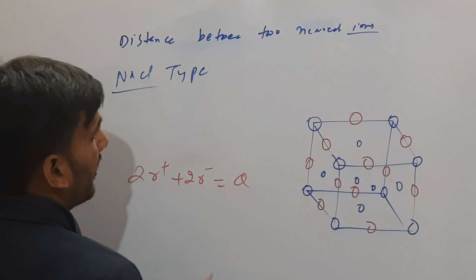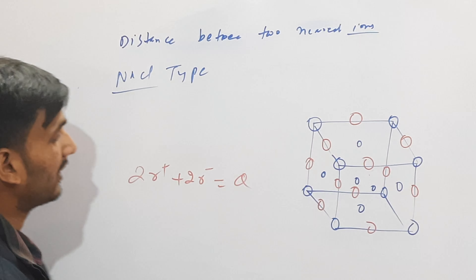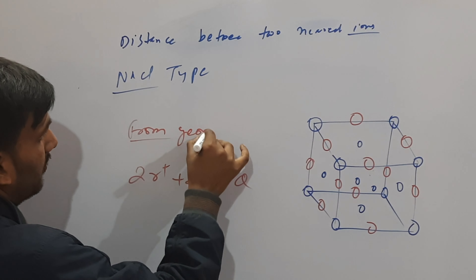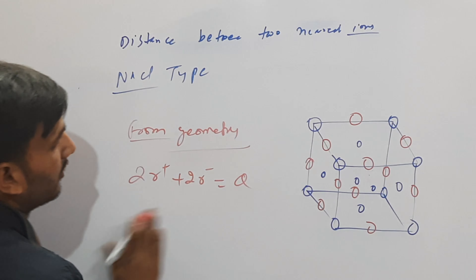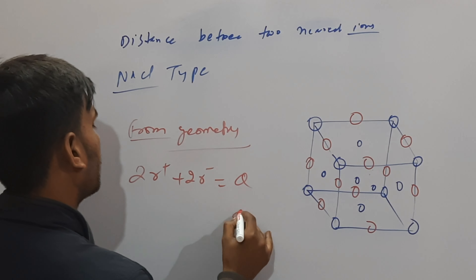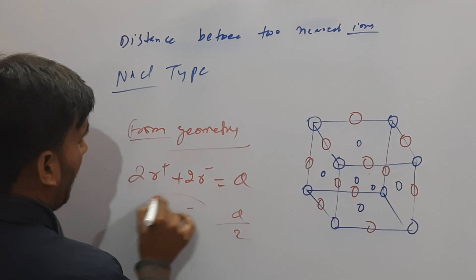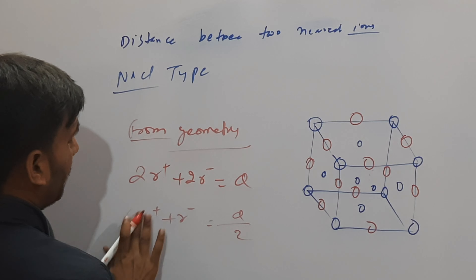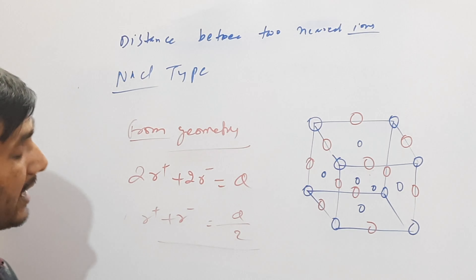Geometry से देख सकते हैं यहाँ पर। From geometry: 2R+ + 2R- equal to A, तो A by 2 equal to क्या हो गया? R+ और R- के बीच में distance है A by 2.